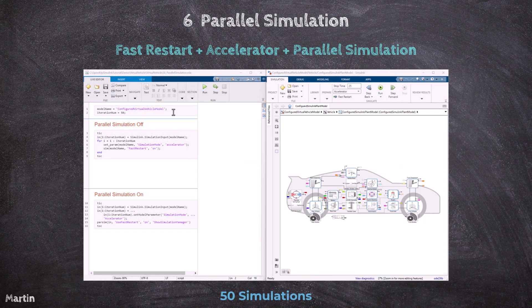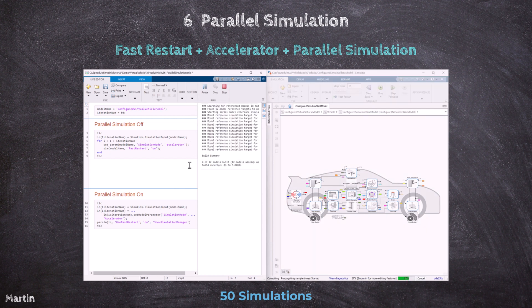In this example, we will showcase the performance benefits of parallel simulation by running 50 simulations of the same model and comparing the simulation time with and without parallel simulation. We begin by running the 50 simulations sequentially in a for-loop, with fast restart and accelerator mode enabled to avoid recompilation between simulations and improve execution performance.